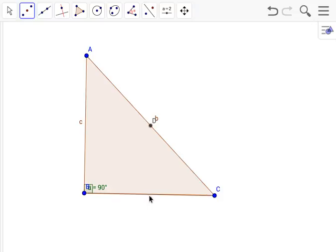Midpoint for CB is right there, point E, and the midpoint for BA is right about there, point F.